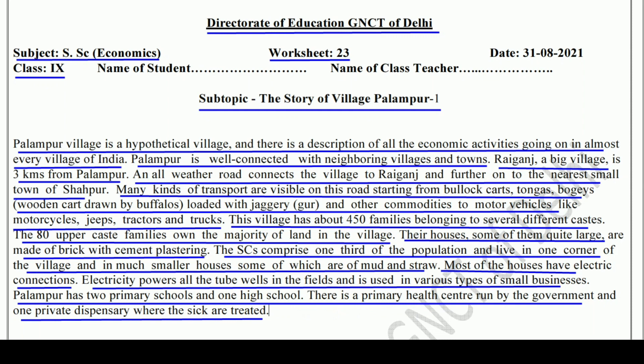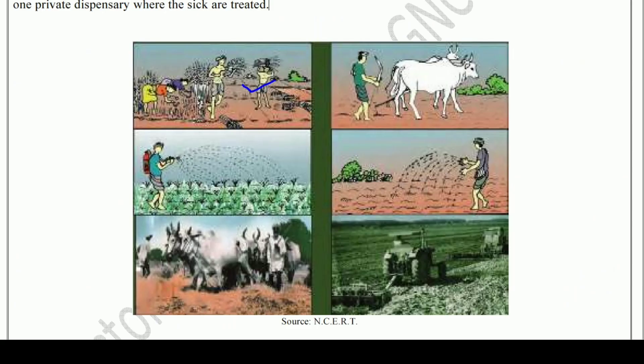Toh this was the introduction of Village Palampur. Now we'll move on to the question-answer section, but before that we'll have to see some pictures of Palampur. So here are the pics of Village Palampur — aur aap dekh sakte hain, you can see the main occupation of this village is agriculture. In photographs se pata bhi chal sakta hai ki yahan par zyada tar log agriculture se hi connected hain.